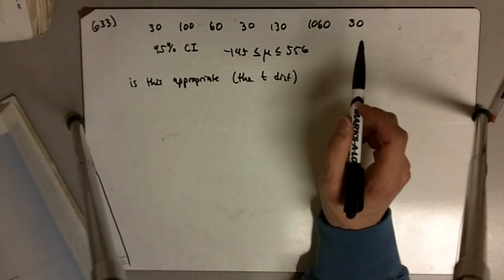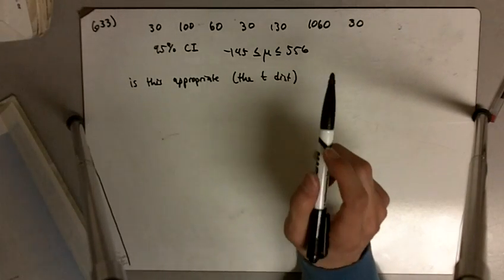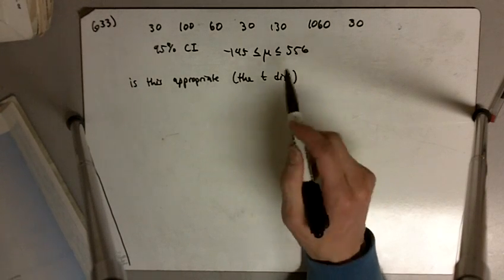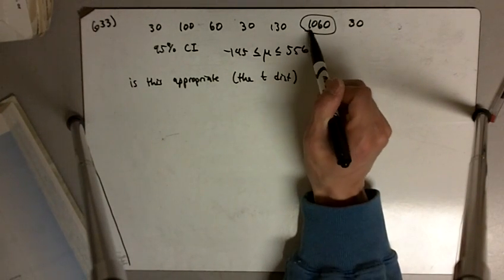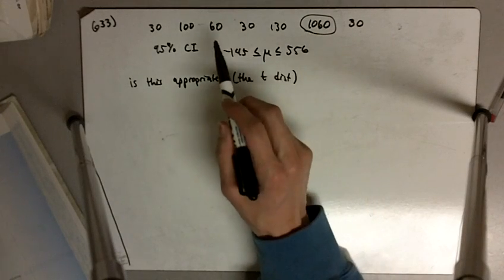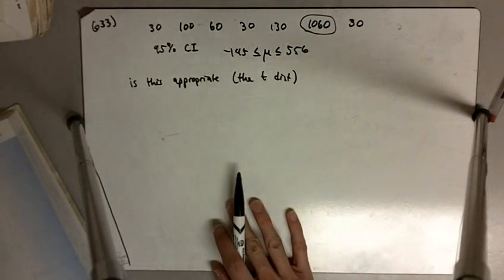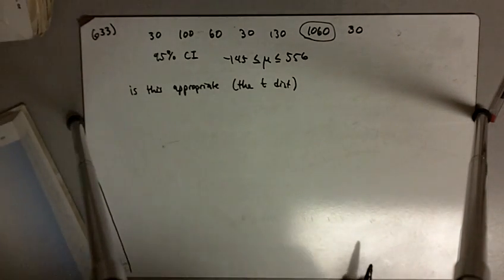The t distribution is appropriate when we've got a pretty symmetric distribution, something that looks like the normal distribution. And to me, this number 1060 is a huge outlier. It's much, much bigger than any of the other numbers.